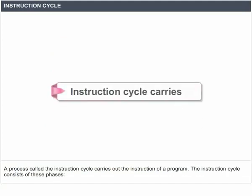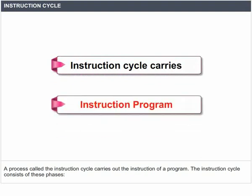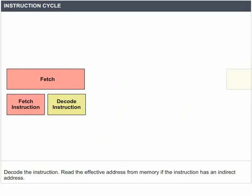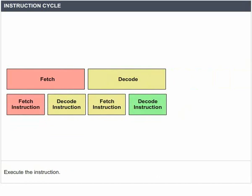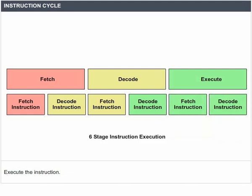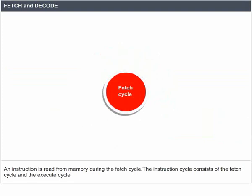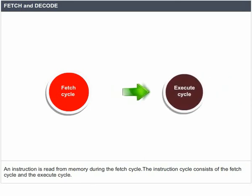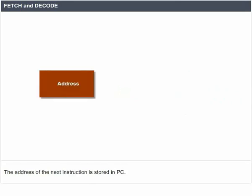A process called the instruction cycle carries out the instructions of a program. The instruction cycle consists of three phases: fetch an instruction from memory, decode the instruction, and read the effective address from memory if the instruction has an indirect address, then execute the instruction. The fetch cycle is identical for all instructions, while the execute cycle is different for each instruction. The address of the next instruction is stored in the PC.